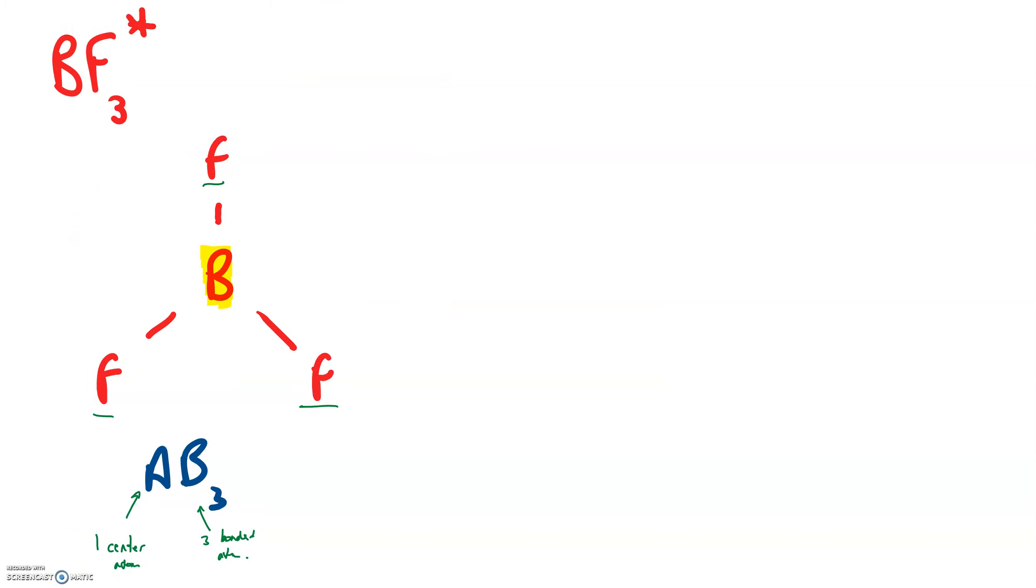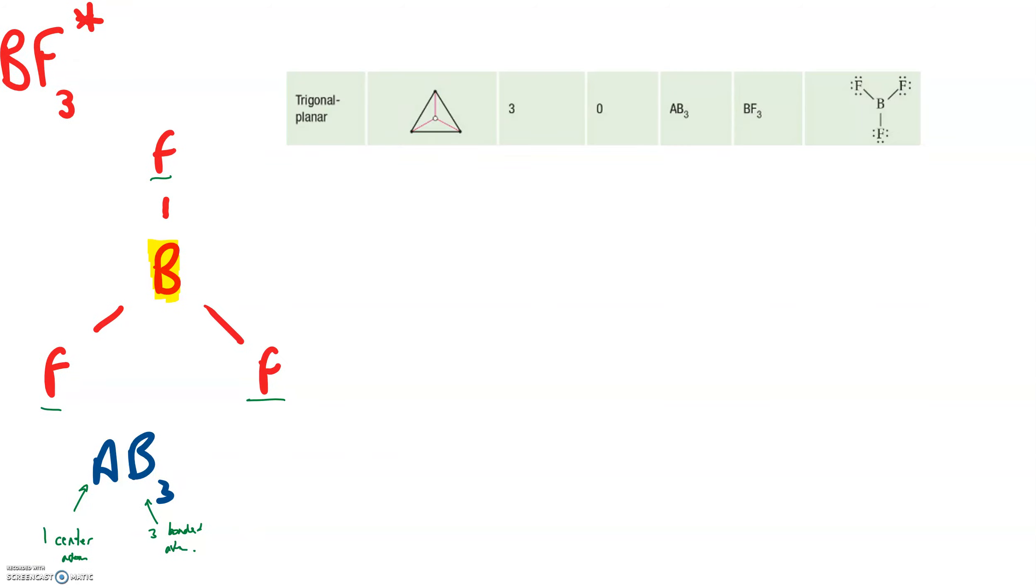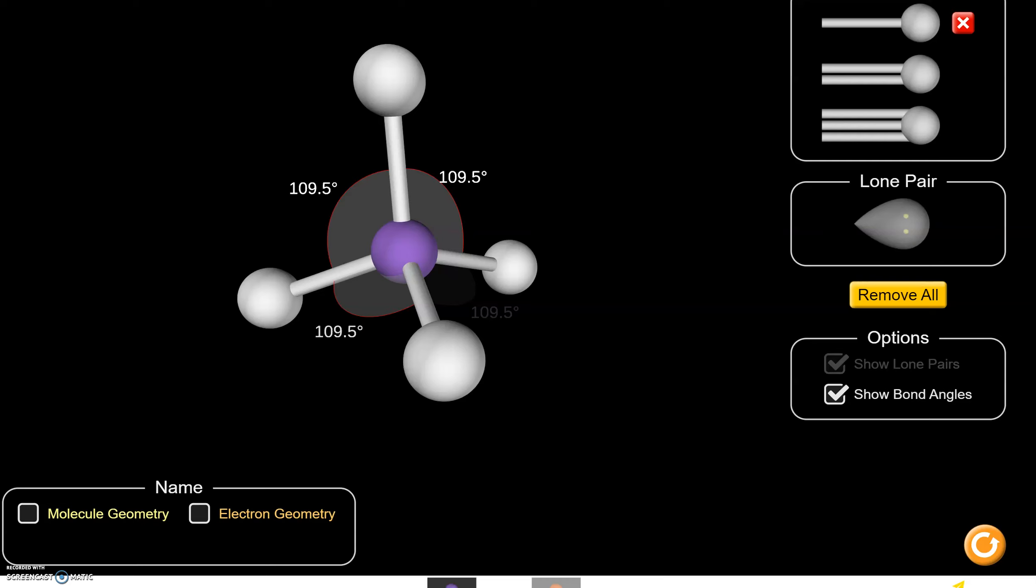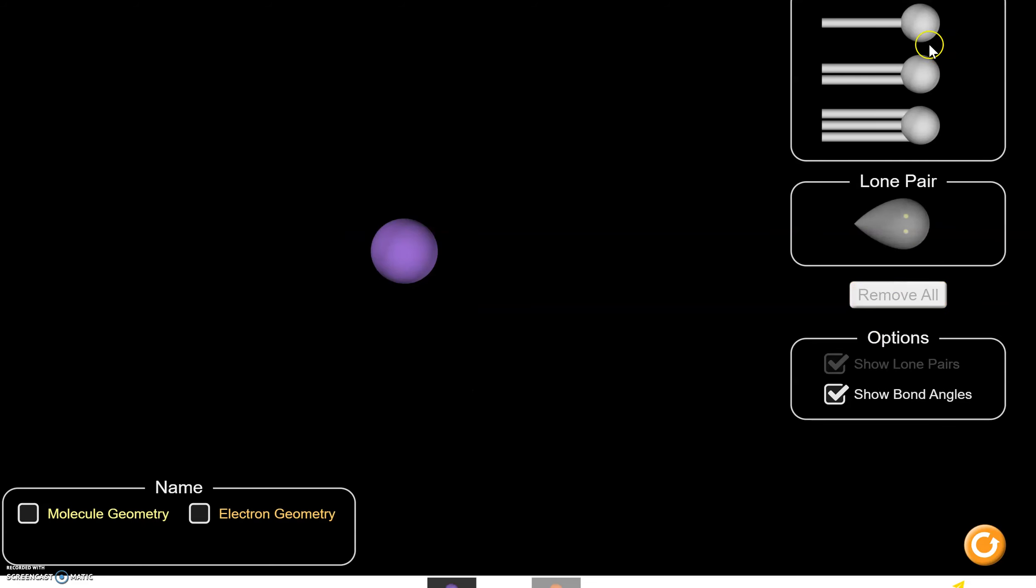So if we were going to look this up on our chart, we'd find a shape that looks like this. According to this chart, anything that has this format AB3, one center atom and three bonded atoms, is going to have this geometry, what we call trigonal planar. If we build it in our generator, it looks like this.